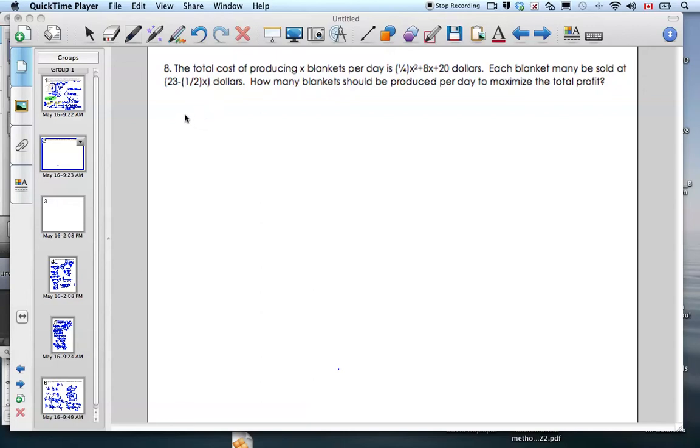Hi there, it's Mr. Robson, and we're going to do another optimization problem here. The total cost of producing X blankets is given, and each blanket may be sold for a specified amount. The question is: How many blankets should be produced per day to maximize the total profit?